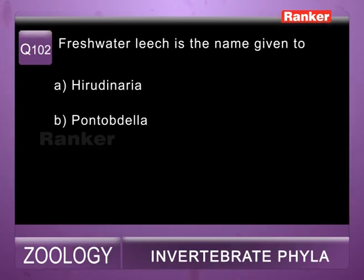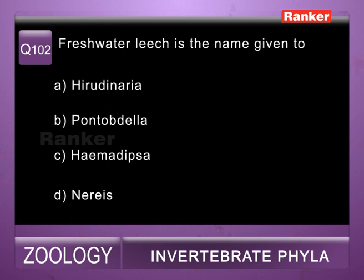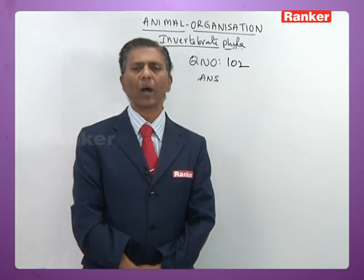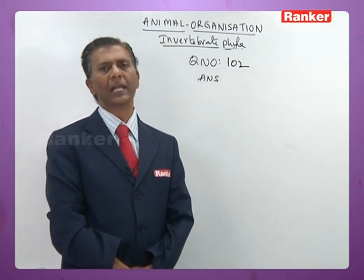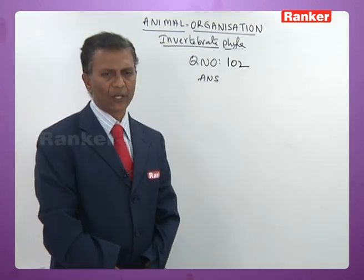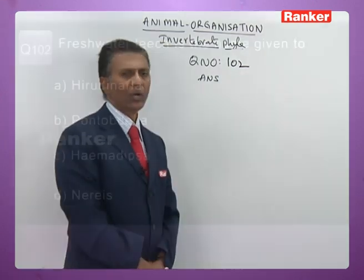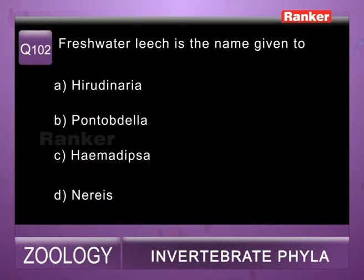Question 102: freshwater leech is the name given to — a) Hirudinaria, b) Pontobdella, c) Haemadipsa, d) Hirudinaria tridentata granulosa (Indian cat leech), which is a freshwater leech. So the answer is a.